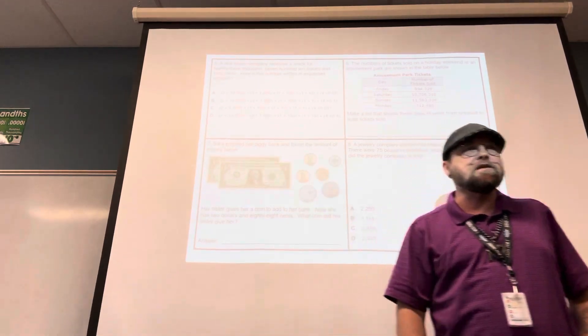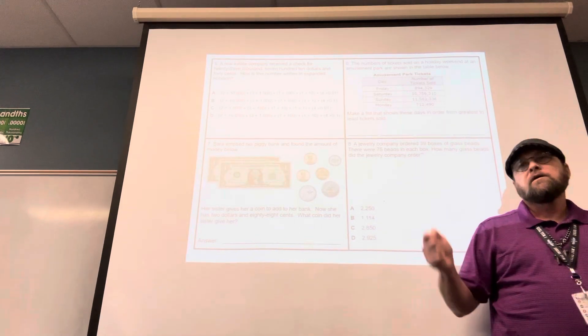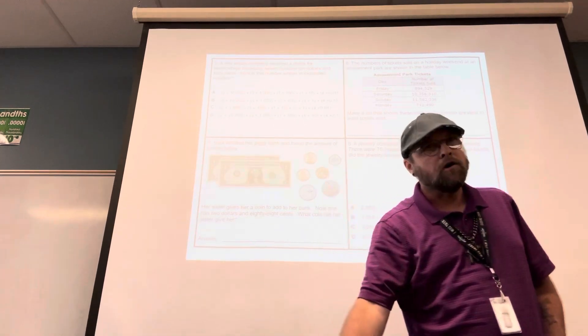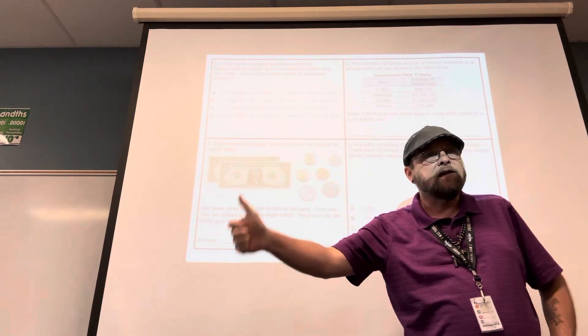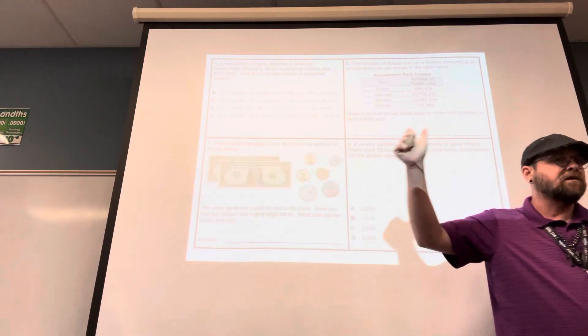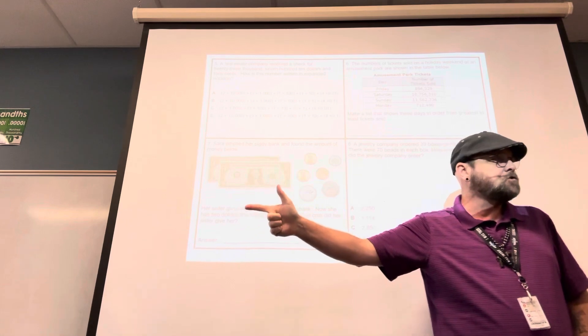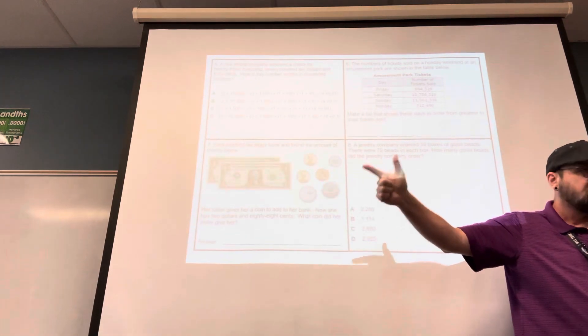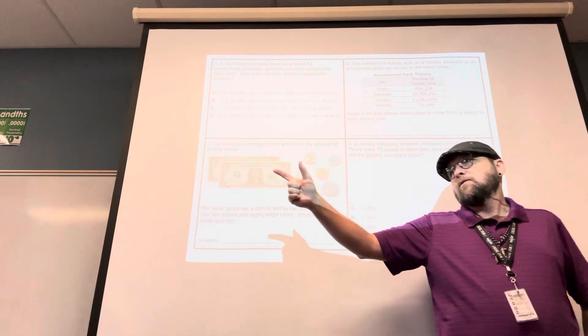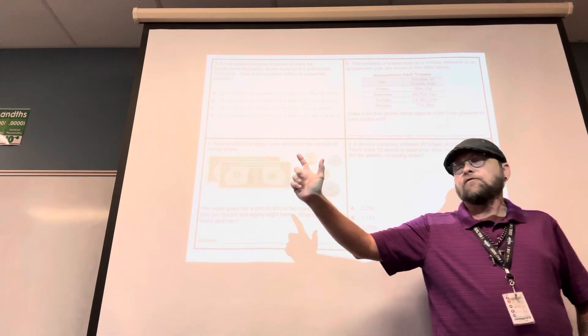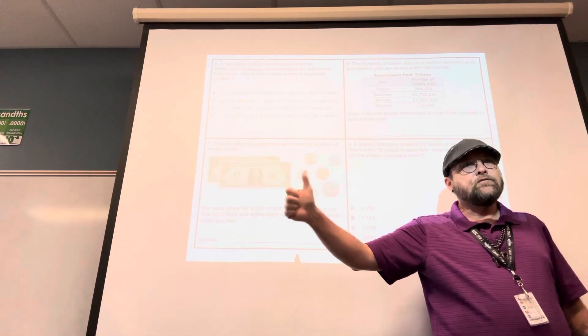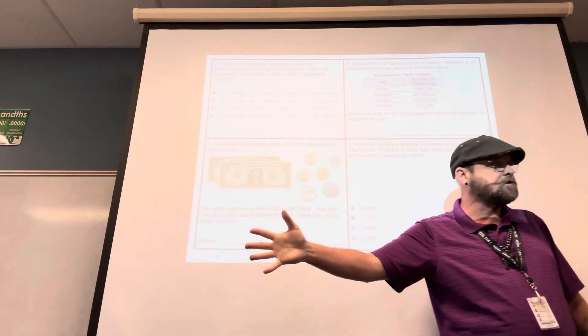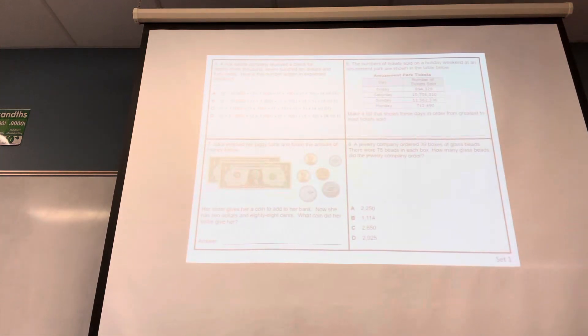So she has $2.63. Her sister gives her a quarter. So if I go $2.63, add 10 cents. $2.73, add 10 more cents. $2.83. And a quarter is worth 25. So if she has $2.83, $2.85, $2.86, $2.87, $2.88. So a quarter would be the correct answer.